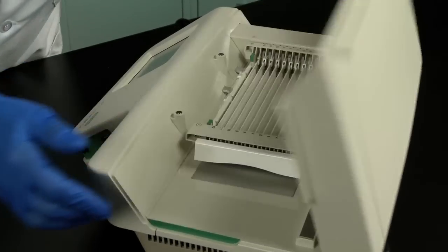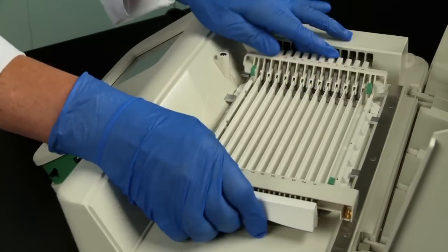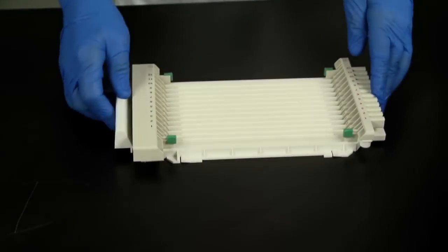After the run is finished, the tray can be removed by sliding it away from the electrodes and lifting it out of the instrument.